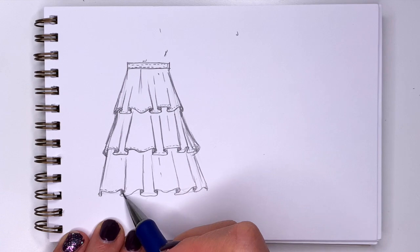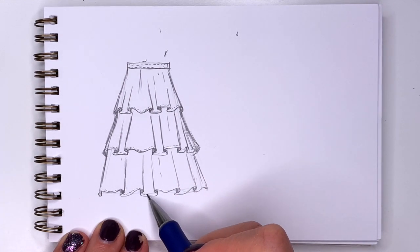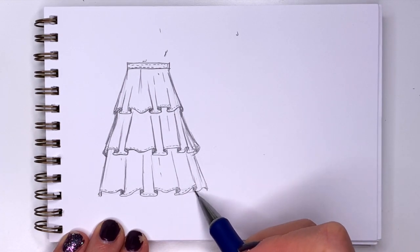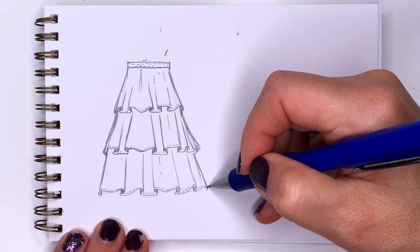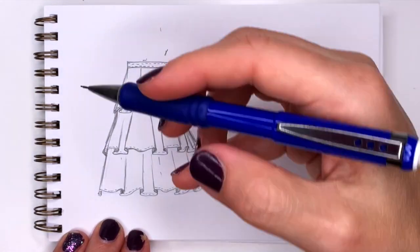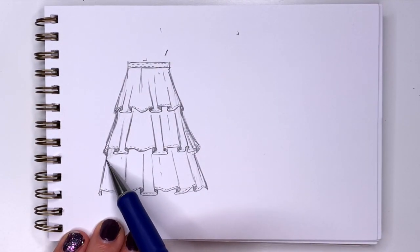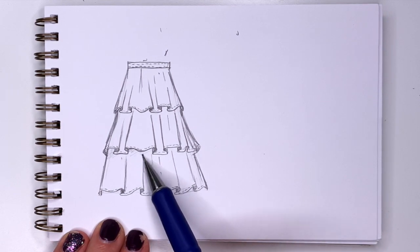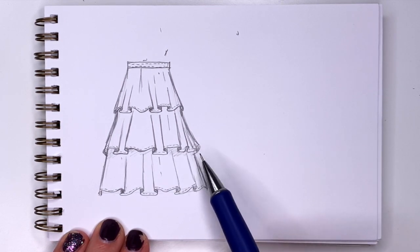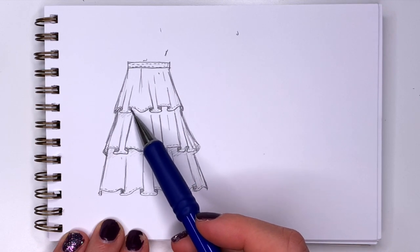You can add the perforated line for the seam line. And then you can also shade this in some. Since this is underneath that. You can add a lot more details to this to make it even more realistic.